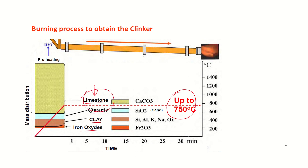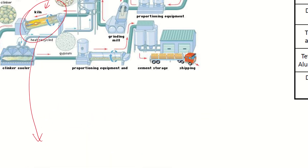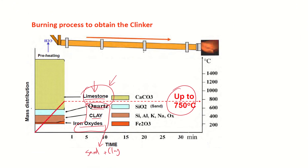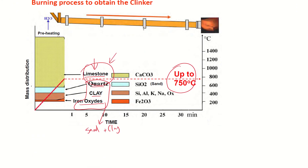That limestone is the limestone that's been quarried, and all of the other elements you see here — the quartz, the clay, and the iron oxides — actually come from the sand plus the clay. So the clay and sand are these two components. Up to 750 degrees, nothing happens; these original components are still intact.